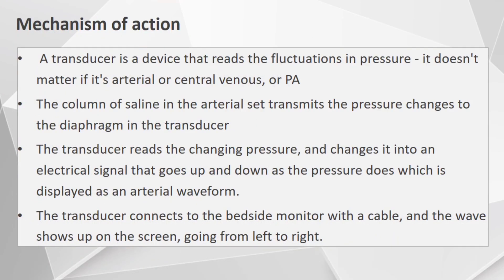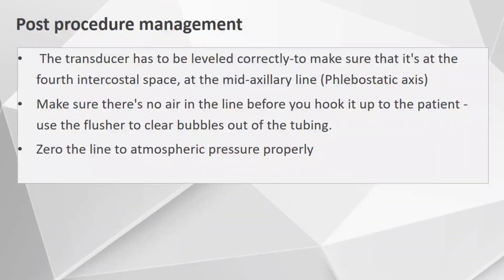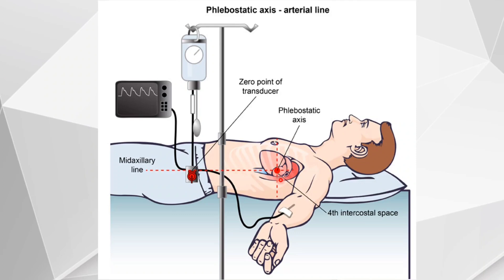Coming to the mechanism of action. A transducer is a device that senses fluctuations in pressure — whether arterial, central venous, or pulmonary artery pressure. The column of fluid in the arterial set transmits the pressure changes to the diaphragm in the transducer. The transducer then senses the changing pressure and converts it into an electrical signal that goes up and down as the pressure does, which is displayed as an arterial waveform. The transducer connects to the bedside monitor with a cable and the wave shows on the screen from left to right. The transducer must be leveled correctly at the fourth intercostal space at the mid-axillary line, which is the phlebostatic axis. There should be no air in the line before hooking it up to the patient, and you should use the pressure to clear any bubbles out of the tubing — that is, zero the line to atmospheric pressure properly.